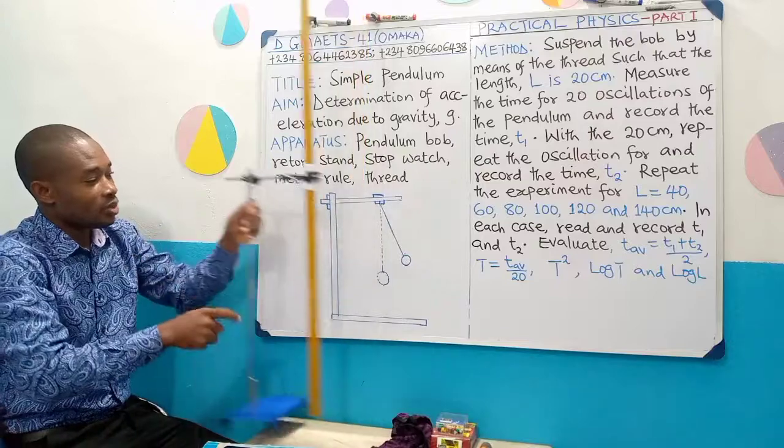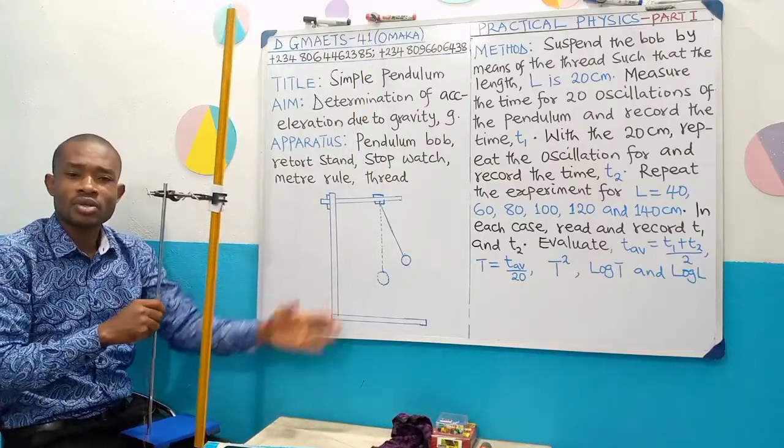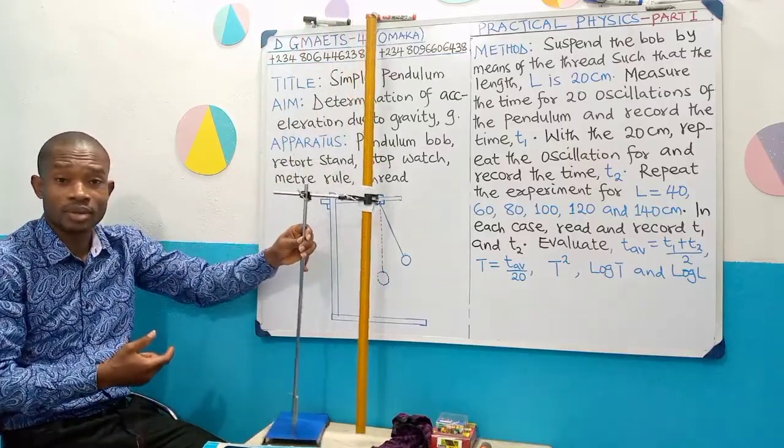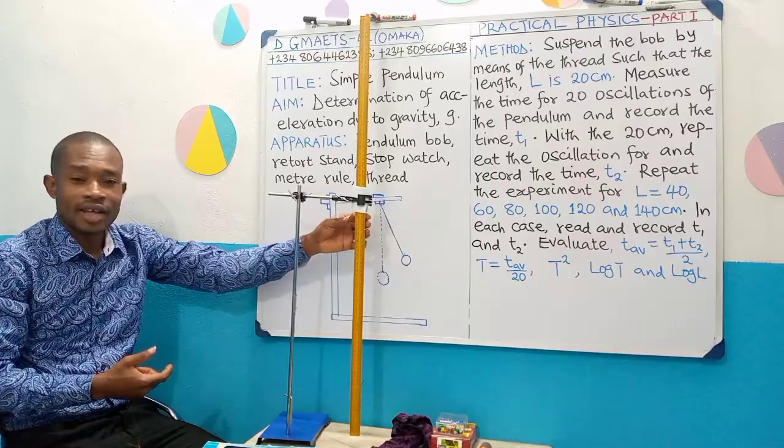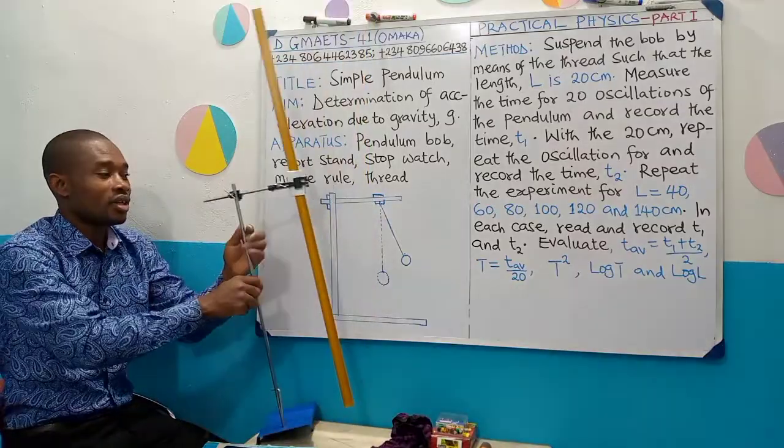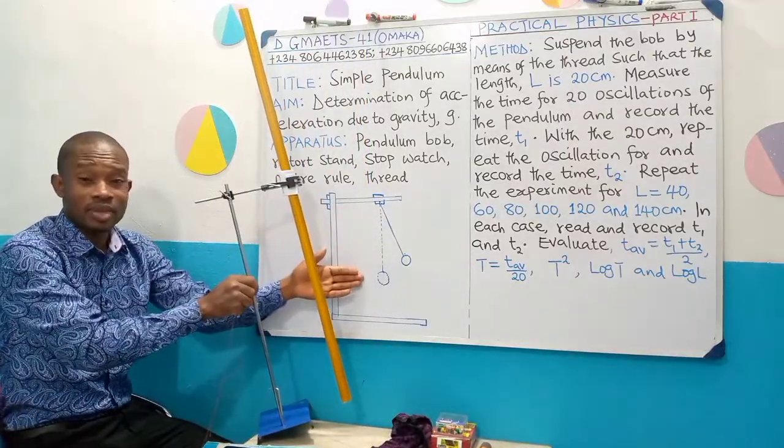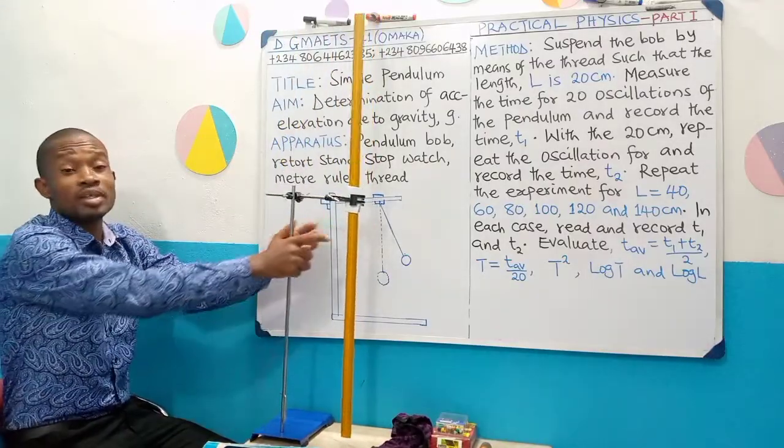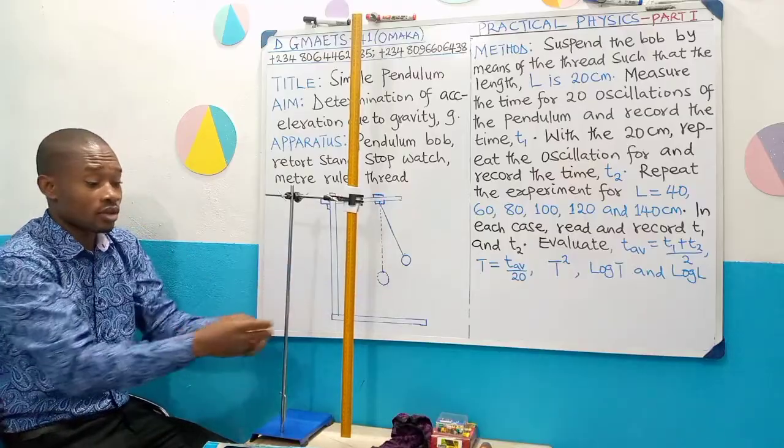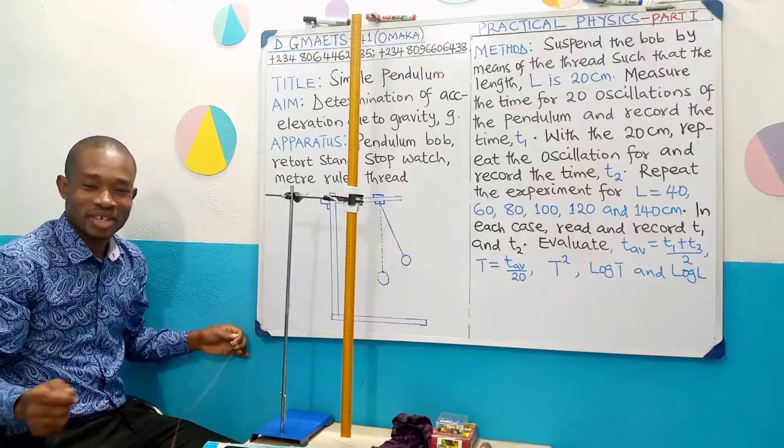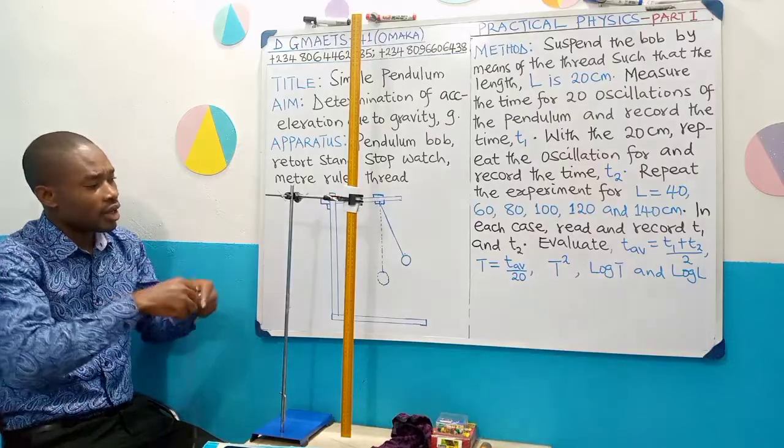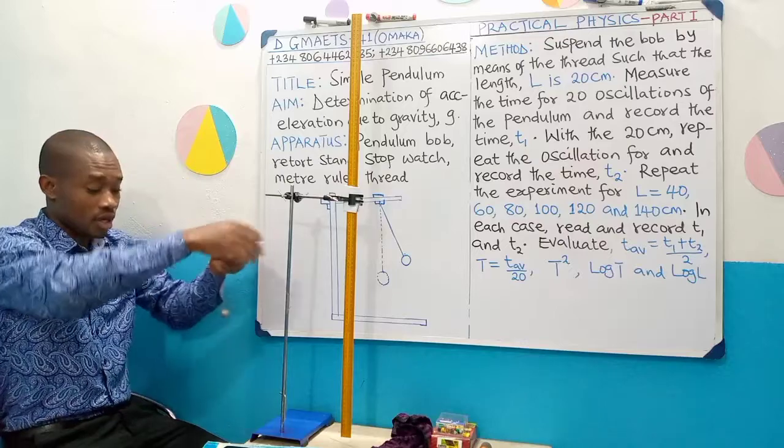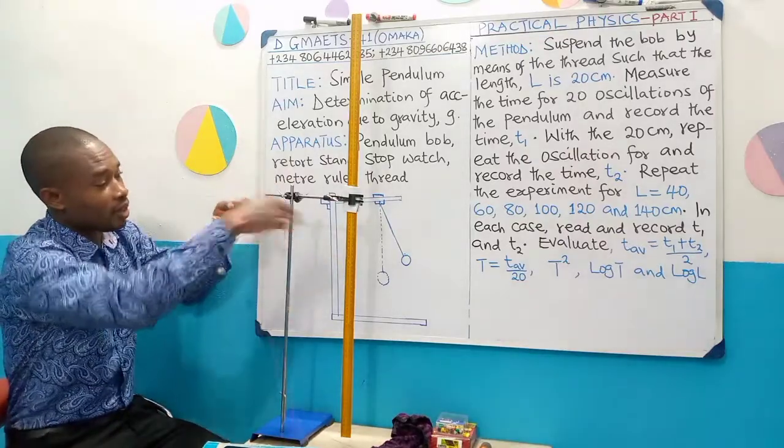On the board here we have the diagram. So this diagram will guide us to know how to set up our apparatus, which I have already done. This is very simple stuff to set up. I decided to clamp the meter rule here. The diagram shows no meter was clamped because it's of no use, but I just chose to clamp it so that I am not always looking for it to measure. Now having said that, what's the method we are going to use for the experiment?